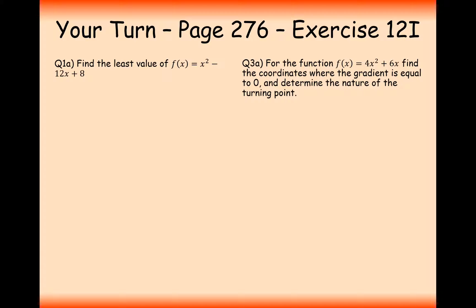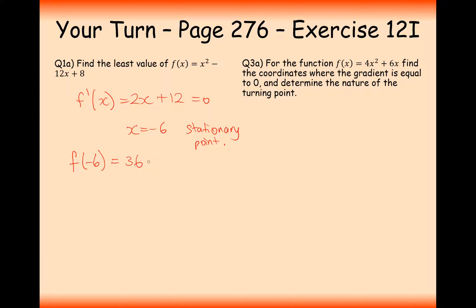Question 1A: find the least value of f(x) = x² − 12x + 8. One way is to differentiate and find a turning point: f′(x) = 2x − 12. Setting equal to zero gives x = −6. We then plug f(−6) back into the function: 36 − (−36) + 8... wait, f(−6) = 36 + 72 + 8 — actually computing gives 80. Since it's a positive x-squared graph, this stationary point is a minimum, so the minimum value of f(x) is −28.